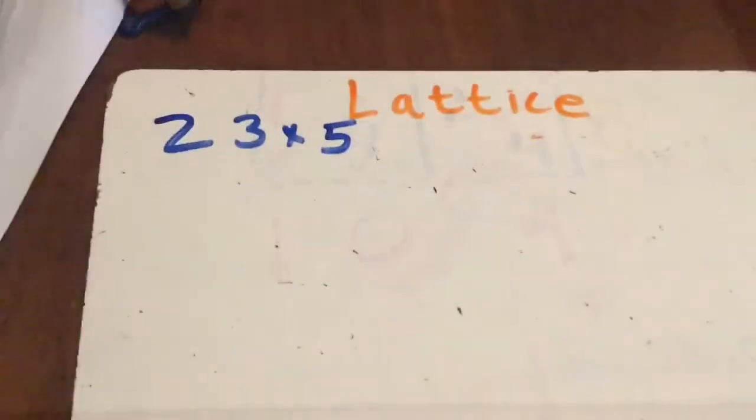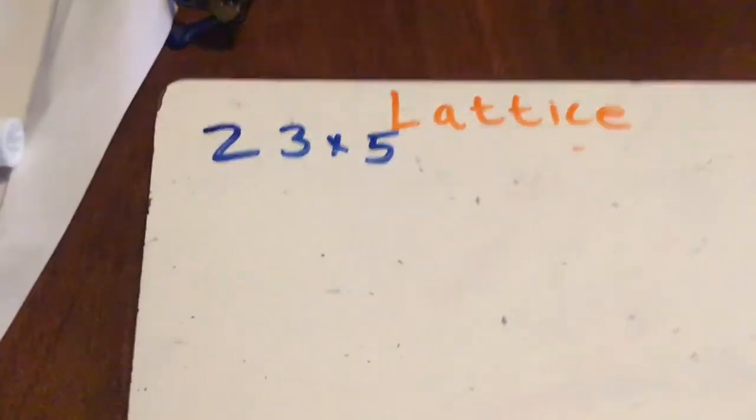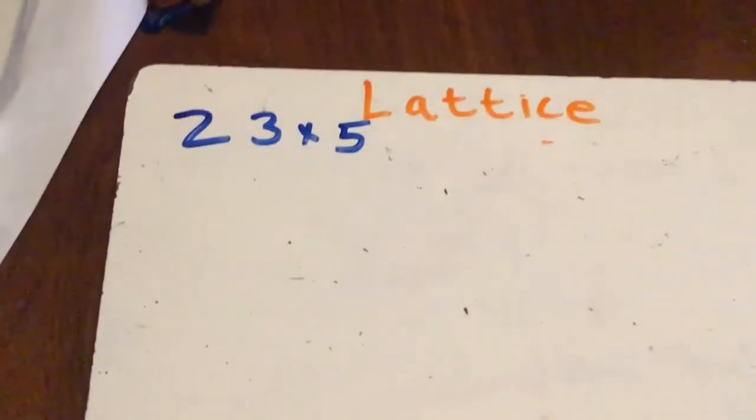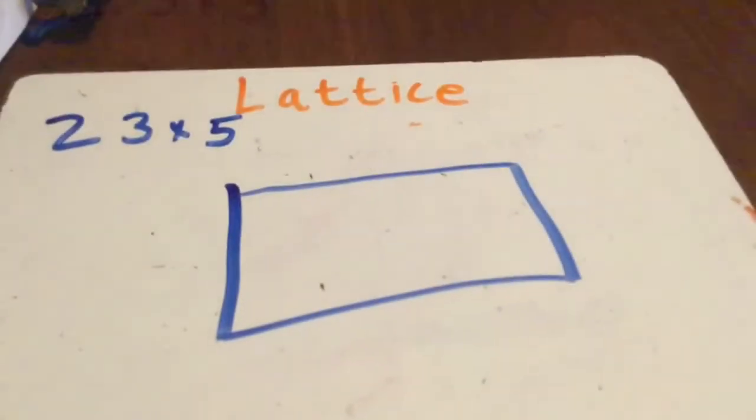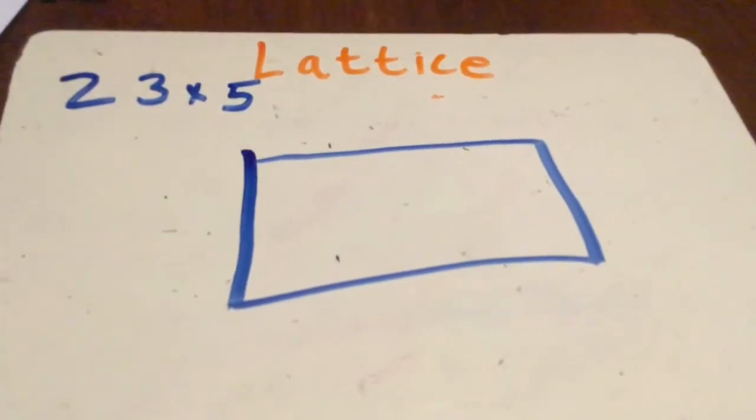Let's do another one. Okay another example. Another math problem. What is 23 times 5? Okay great. First thing I'm gonna do is draw my lattice box. That's what I need to do. Step 1, draw the rectangle.